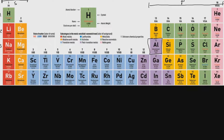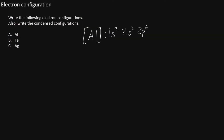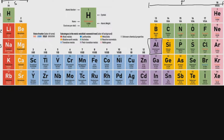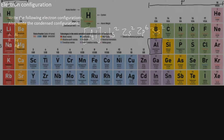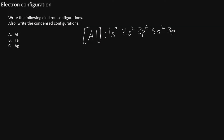Now that we've completed level 2, we move to level 3. On level 3, we again go through the S block, giving us 3S2. Now we stop on aluminum. Aluminum is the first box in the P block on level 3, so we write 3P1. This gives us the complete configuration for aluminum: 1S2, 2S2, 2P6, 3S2, 3P1.